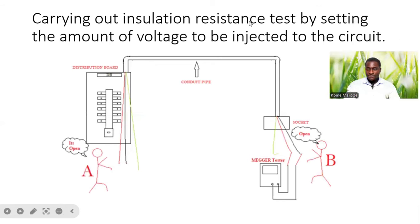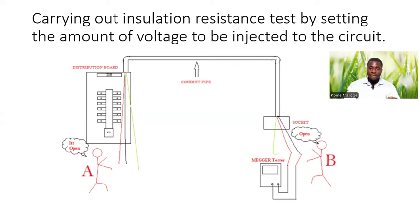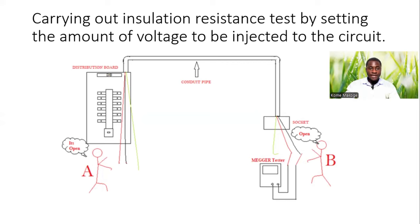Carrying out insulation resistance test by setting the amount of voltage to be injected to the circuit. The code says a DC voltage of not less than twice the supply voltage should be injected to that circuit. So if our panel board is 240 volts, the voltage to be injected will be not less than twice 240 volts. We select that amount on our selector range on the mega tester and inject it into the circuit.